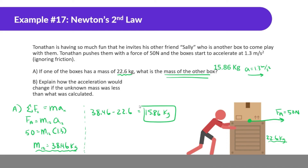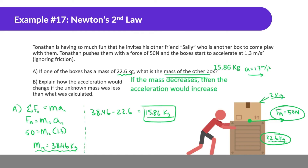Part B: explain how the acceleration would change if the unknown mass was less than calculated. If the second box were lighter — say 2 kilograms instead of 15.86 — and still pushed with the same 50 newtons, there's less total mass, so the boxes would accelerate more. If mass decreases, acceleration increases. If something is lighter and you push it with the same force, it's easier to accelerate.